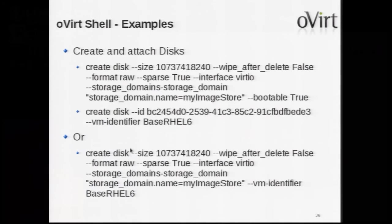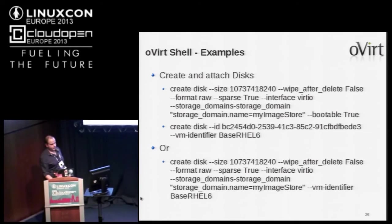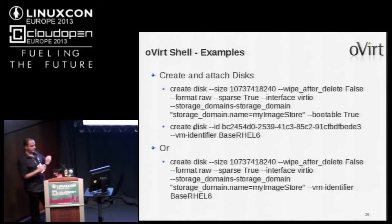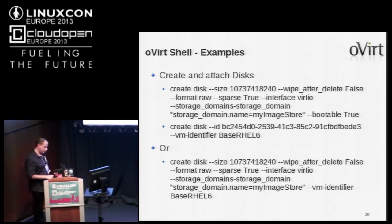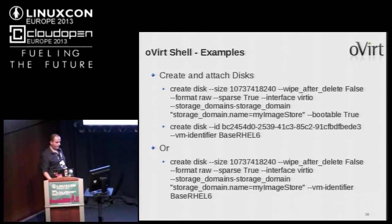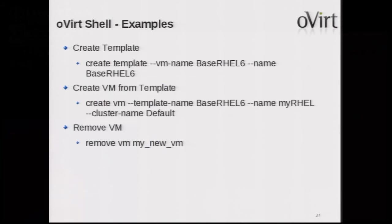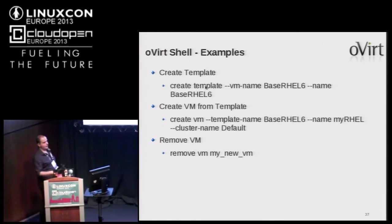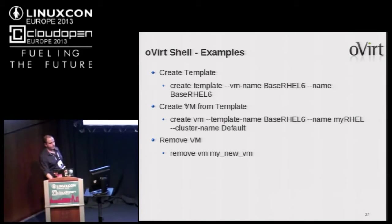Here's an example to create a new disk — passing all parameters — and then attaching the disk to the VM. Disks were originally only a sub-collection inside VMs, but now disks are also a standalone collection, so you can create a disk and attach it later using the create command. We also see how to create a template: specify the VM name you want to create the template from and the template name, and then create a VM from it.